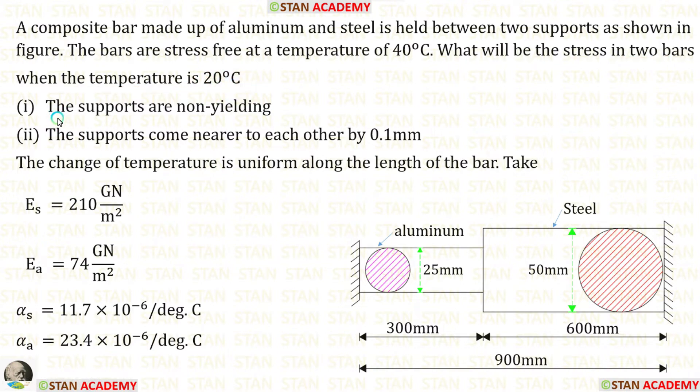The first condition is that the supports are non-yielding. The second condition is that the supports come nearer to each other by 0.1 mm. The change of temperature is uniform along the length of the bar. The Young's modulus for steel and aluminum are given. The coefficients of linear thermal expansion for steel and aluminum are given.